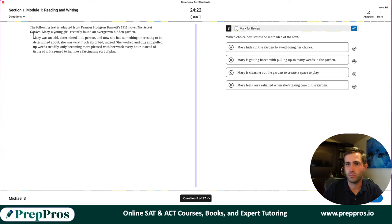Main idea of the text here. Really small little passage. Secret garden. Mary was an odd, determined little person, and now she had something to be determined about. She was very much absorbed indeed. She worked and dug and pulled up weeds steadily, only becoming more pleased with her work every hour instead of tiring of it. It seemed to her like a fascinating sort of play. So really just saying she's really into gardening and she really loves it here. She's becoming more pleased with every work of hour instead of tiring. She enjoys spending time in the garden.